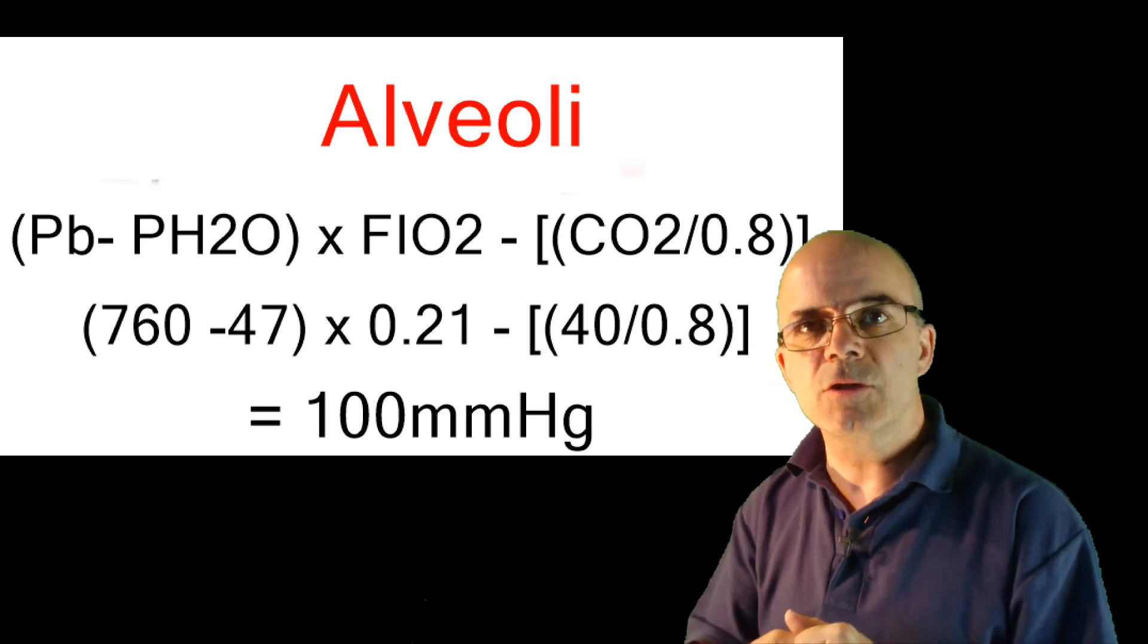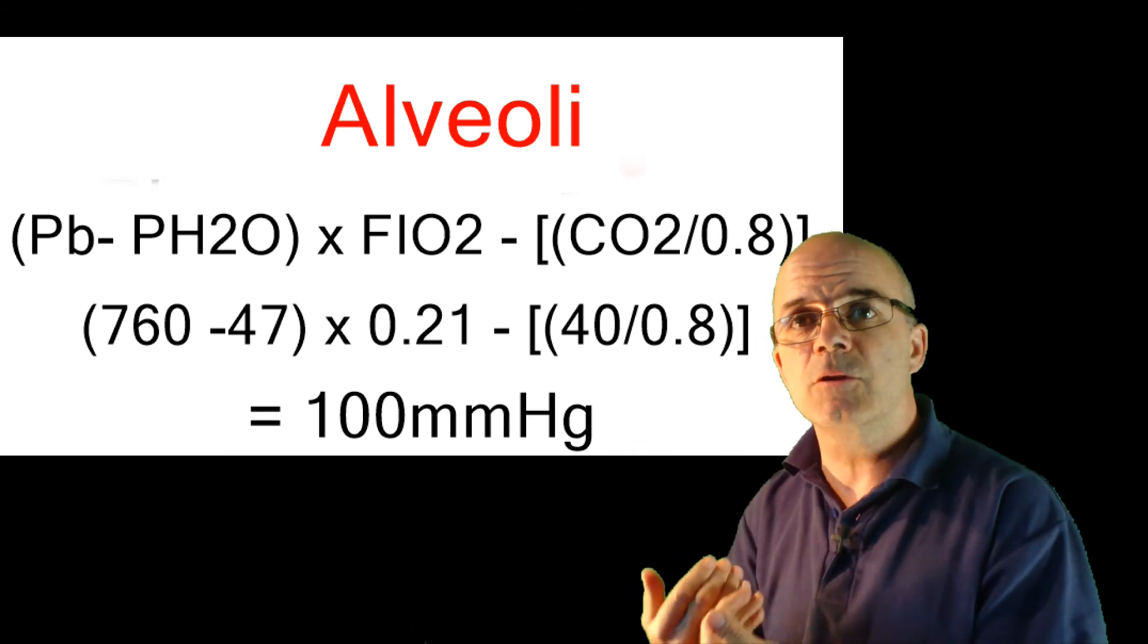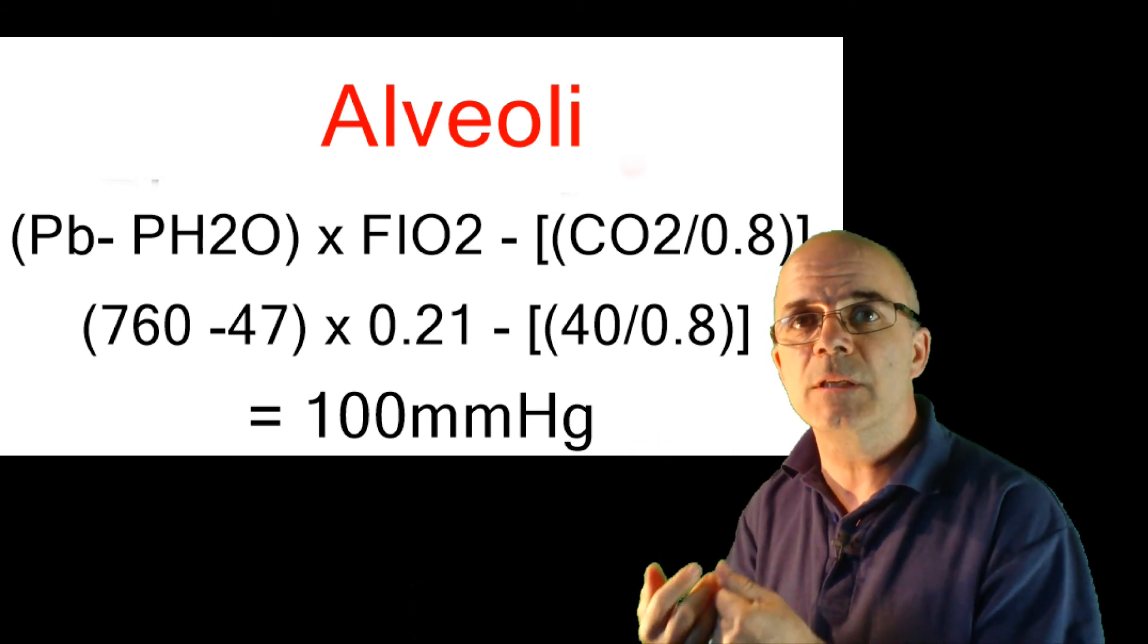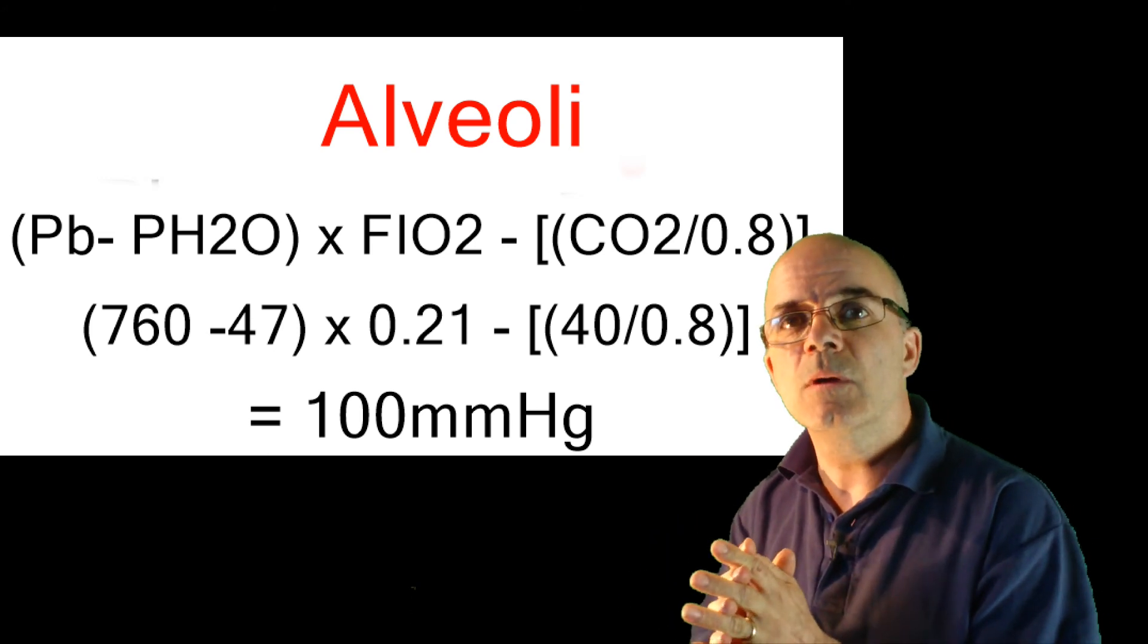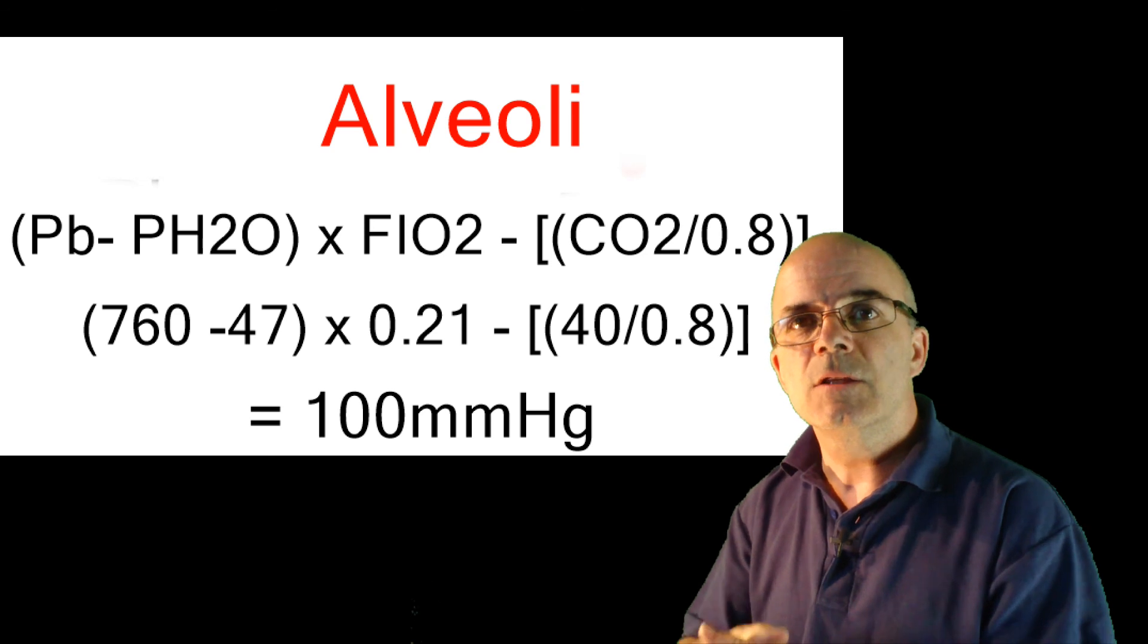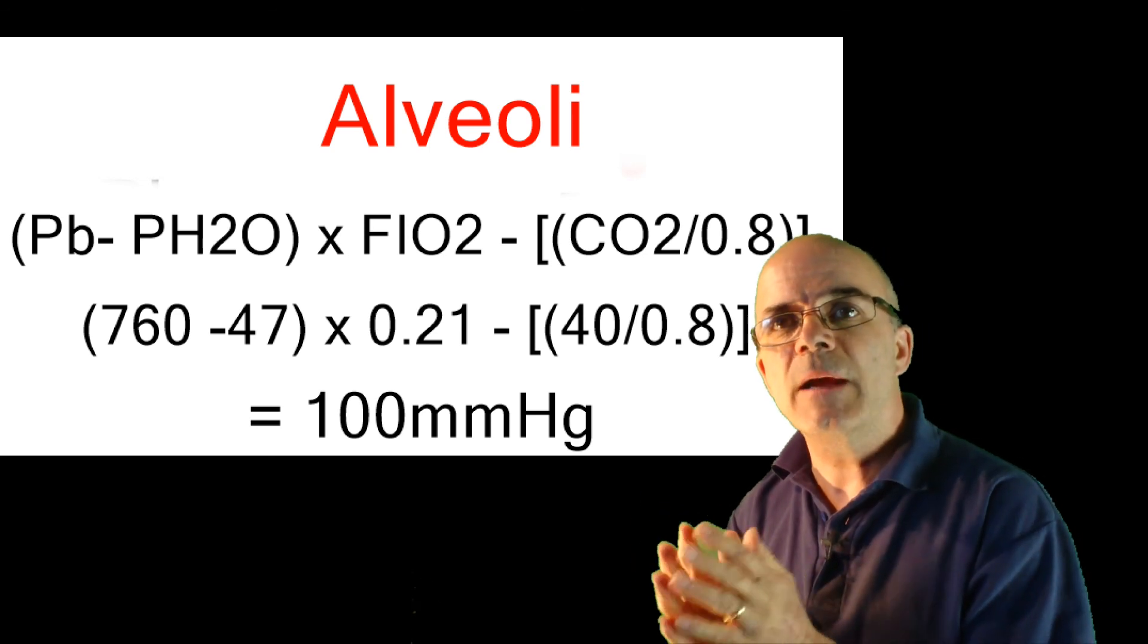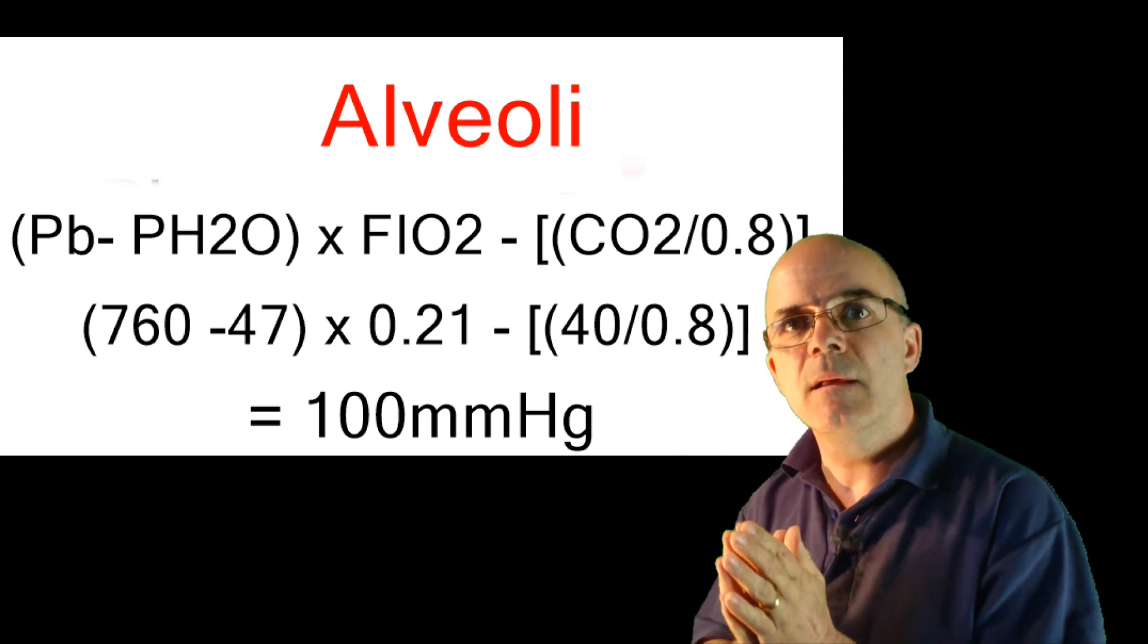And then finally, in the artery, if there's no lung disease, then the pressure of oxygen within the artery should also be 100 mmHg. So the PaO2 will be 100 mmHg. So the AA gradient is a comparison of the oxygen pressure in the alveoli, big A, and the artery, small a.